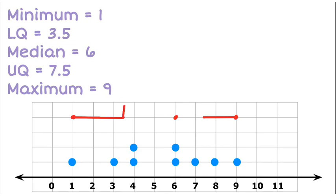Now I want to make a box in the middle between those points. And I'm going to draw another line going through there at the median. So there is my box and whisker and my dot plot.